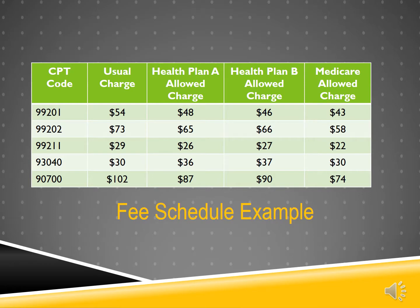How much does a doctor or organization charge for a specific service? This slide shows an example of a fee schedule for a healthcare organization. The first column shows CPT codes — procedure codes for services rendered during the patient's visit. The next columns show corresponding charges for each procedure code. The usual charge is what the organization will charge for the service. For example, for code 99201, which is an office visit for a new patient with minimal time and effort, this organization will charge $54. Health plans listed on a fee schedule include the plans that a provider participates in, meaning they agree to a lower charge due to other benefits they receive by being in the contract. Health Plan A and B are two plans this organization participates in. Note the difference in the allowed amount each plan will pay for procedure code 99201. Fee schedules vary from contract to contract.